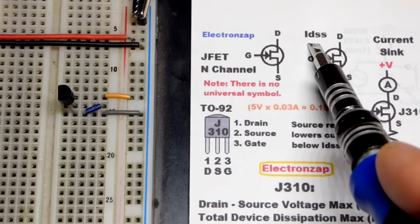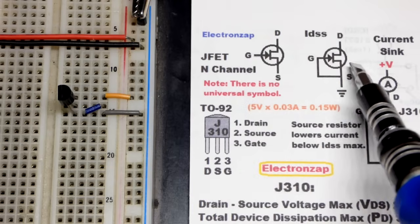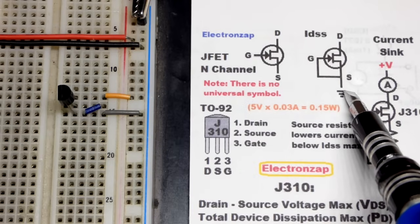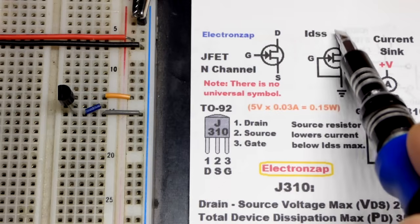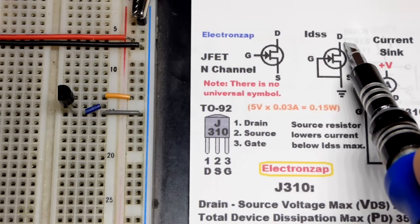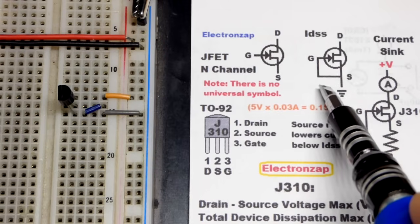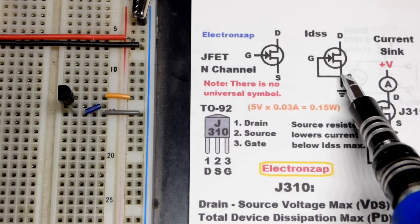So that's an important property of the JFET right there. That's when you have the source directly to ground. That's why it's doubled up, S right there, to ground. Drain is usually where you put the load, and we're just going to connect it to the positive supply right there to do a quick test.